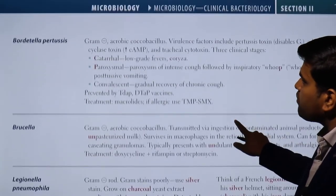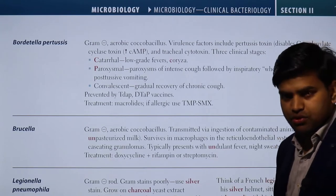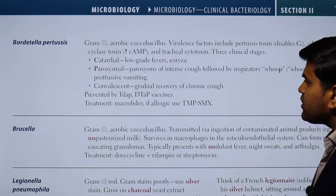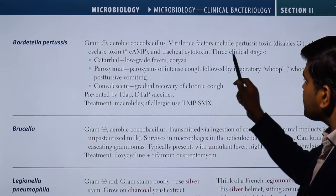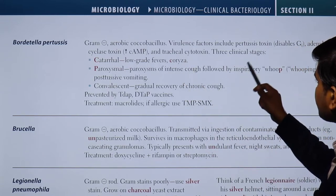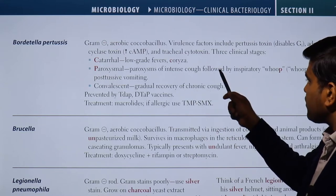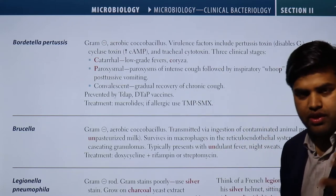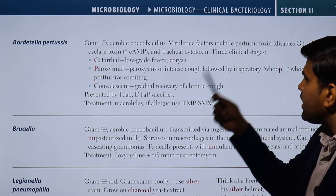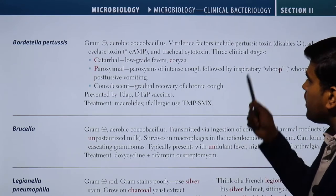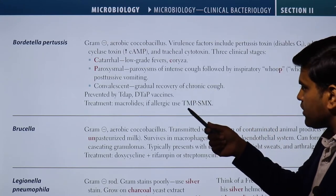Moving forward, we are going to page 143 where we will talk about Bordetella pertussis. Bordetella pertussis is actually a gram-negative aerobic coccobacilli that has virulence factors including pertussis toxin, adenyl cyclase toxin, and tracheal toxin. So there are three toxins that are very important. They also have three clinical stages: the catarrhal, paroxysmal, and convalescent.